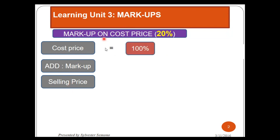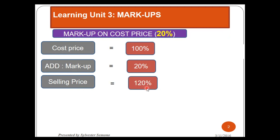Because the markup is on cost, it means cost price will always be 100%. If the markup was on selling price, this 100% was supposed to be in line with the selling price. The markup is given to us as 20%. If you follow the formula, the cost price plus the markup gives you the selling price. So our selling price is going to be 120% according to the percentages. My goods must be sold for 120% for me to gain 20%, because if I can only sell them for 100%, it means I'm not going to earn anything as a profit.